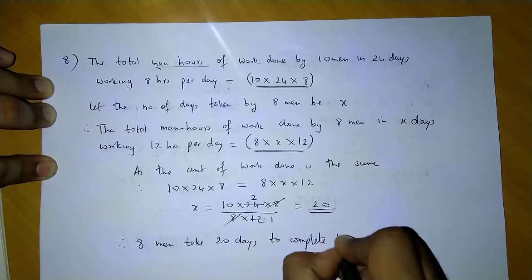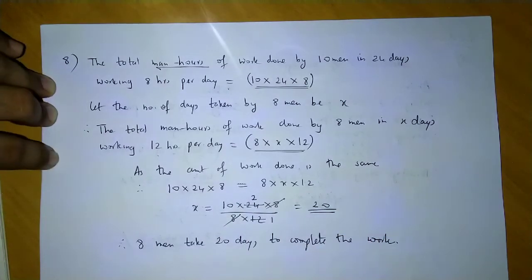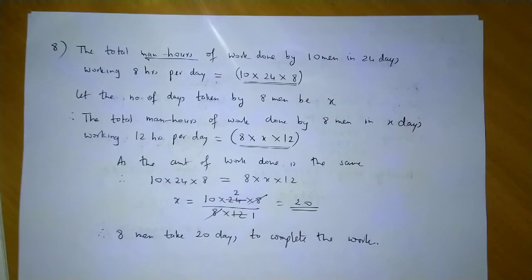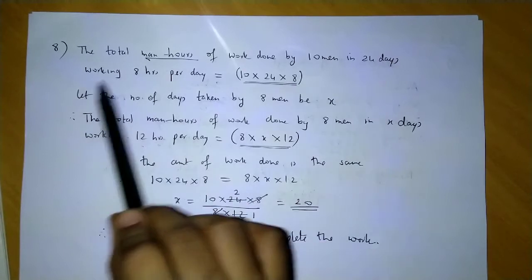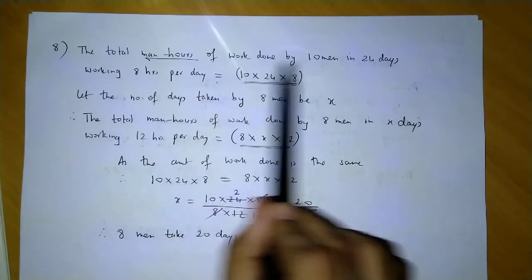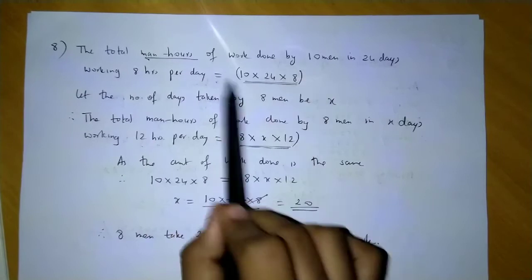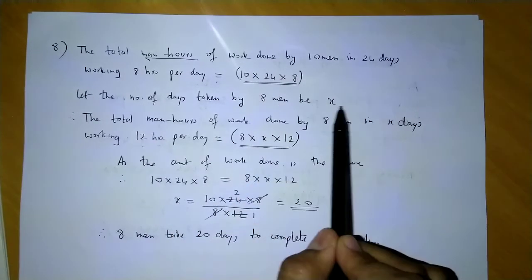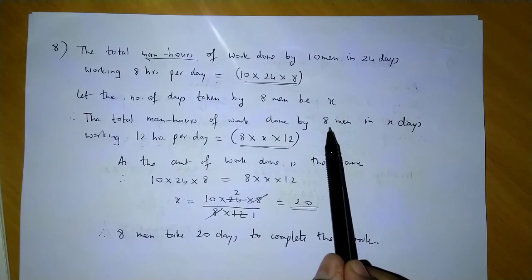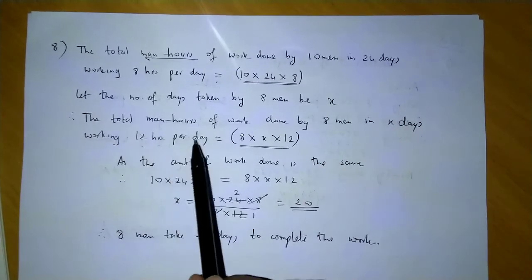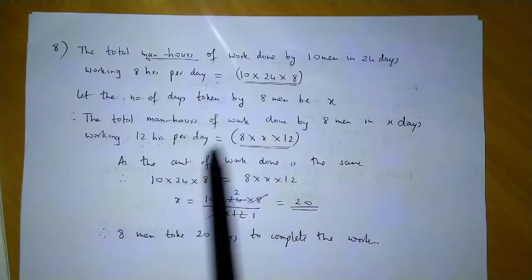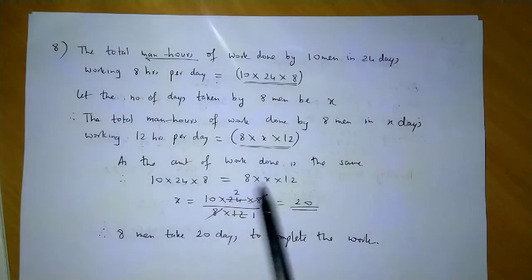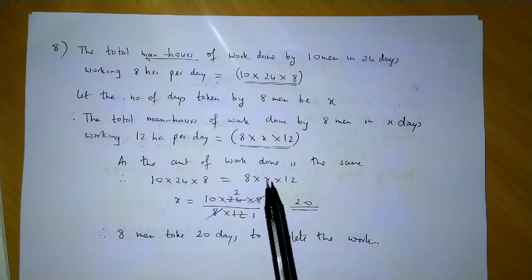To complete the work. So the solution is very easy. First you find out the total work done for 10 men in 24 days working 8 hours per day, which will be 10 × 24 × 8 man hours. Then let 8 men take x days. So 8 men's work in x days working 12 hours per day would be 8 × x × 12 man hours. Now the amount of work done by both groups is the same, so we equate the man hours. And from this you get the number of days as 20.